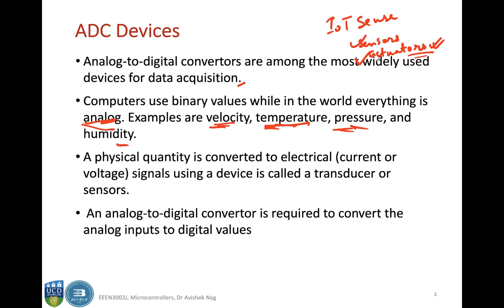The data acquired — corresponding to sensed values like temperature, pressure, velocity, humidity — is stored in the sensors in a digital format because all the devices inside the sensors are digital in nature, and also in the actuators the devices are mostly digital in nature. So there are a lot of microcontrollers embedded in the sensors and actuators, and those microcontrollers need this data not in analog form, but in digital form. Therefore, analog to digital conversion is very important.